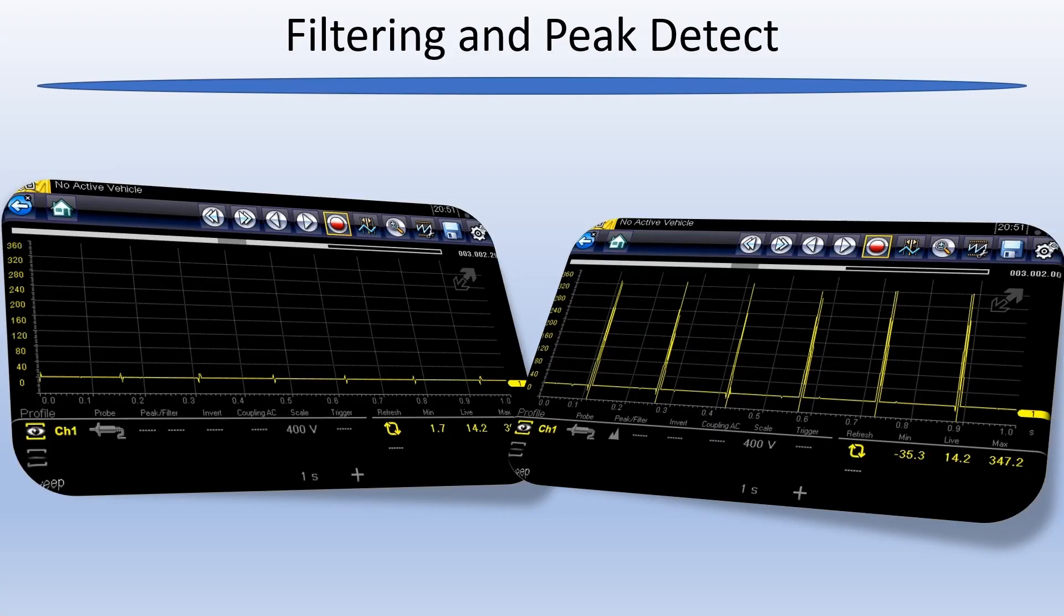Here are two captures, one with and one without peak detect. In the one without, you can't even tell that this is a primary ignition capture because I have so much time on the screen. The spikes are completely gone. Here's another video with the MODIS Edge on my transit connect, playing with peak detect and turning it on and off.